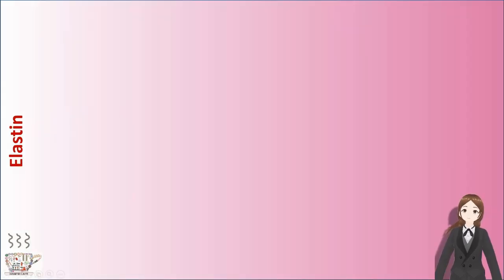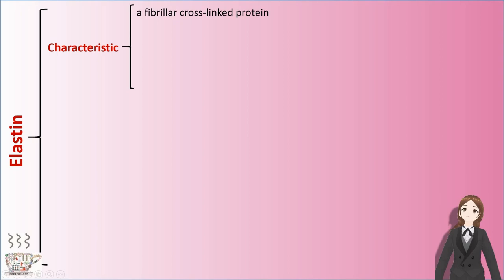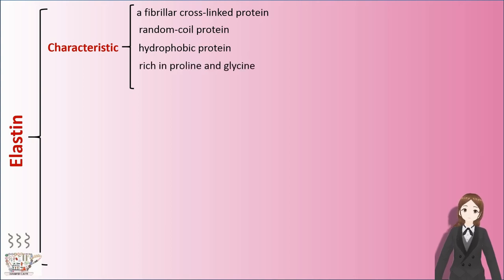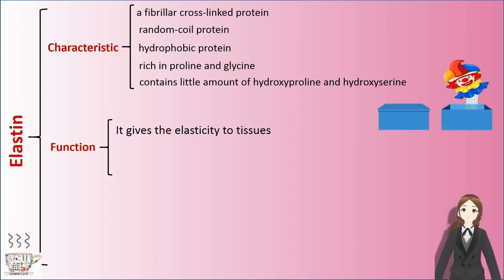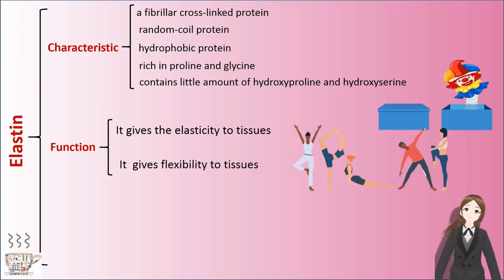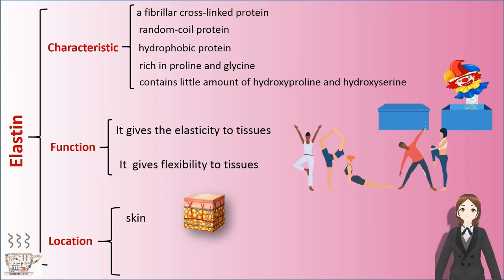Elastin is a fibril cross-linked random coil and hydrophobic protein. It is rich in proline and glycine, and contains little amounts of hydroxyproline and hydroxyserine. The function of elastin is to give elasticity and flexibility to tissues. It is located in the skin, blood vessels, and lungs.